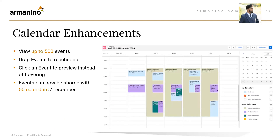Up next is calendar enhancements. You will now be able to view up to 500 events. You will be able to drag events to reschedule — before, you would have to click into it and change the time manually, but now you can just drag and drop. Clicking an event to preview instead of hovering is another improvement. Events can now be shared with 50 calendars and resources, which was previously limited. There are many new features added to the calendar.